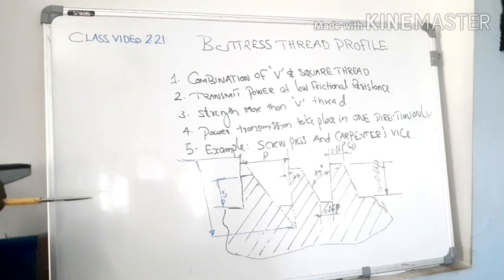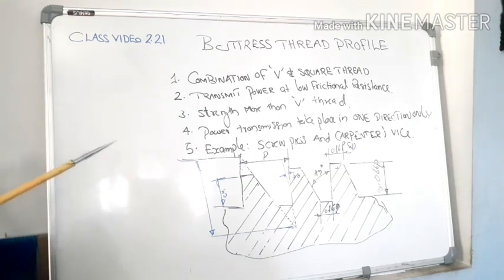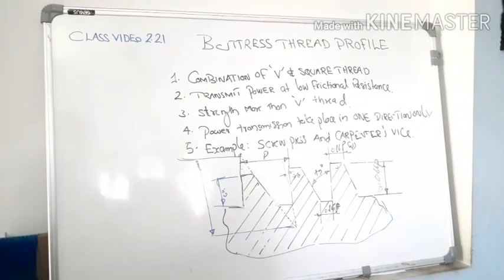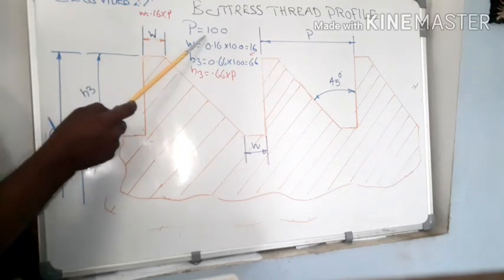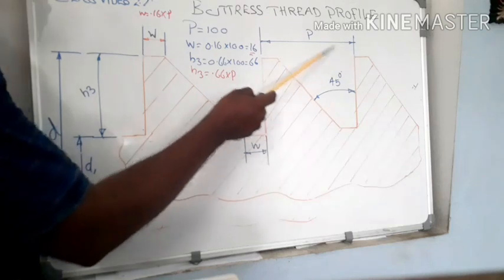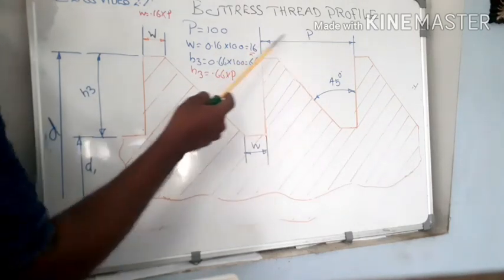Now we have to discuss how to construct this buttress thread using mini drafter or using your scale or other instruments. Now we have to construct a buttress thread using a mini drafter. Here I am showing pitch value - that is given 100 mm. That means this distance is 100 mm marked as P.